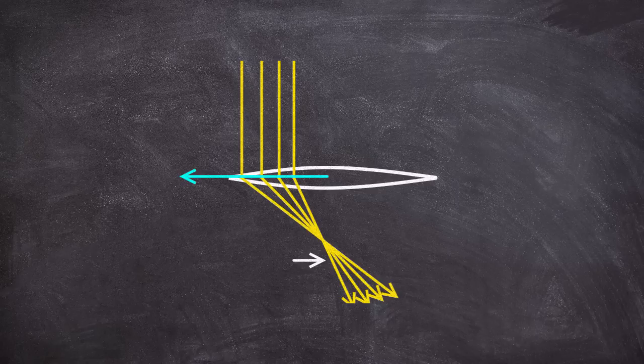Of course, if I only imagine illuminating the left side of the lens, then light is being bent to the right, and thus the lens is pushed to the left.